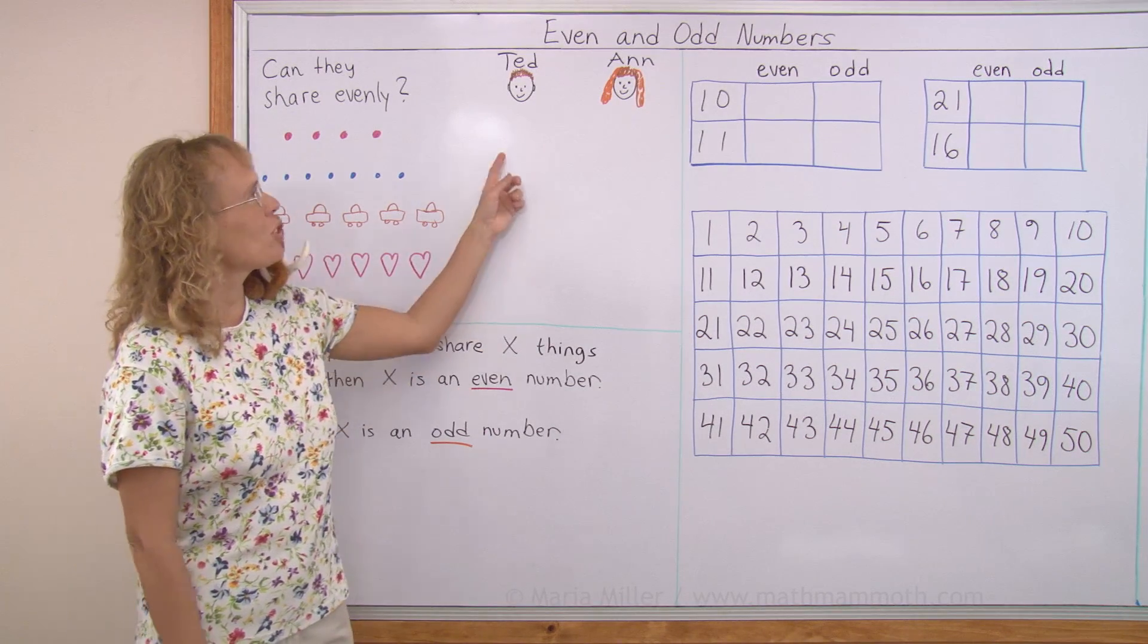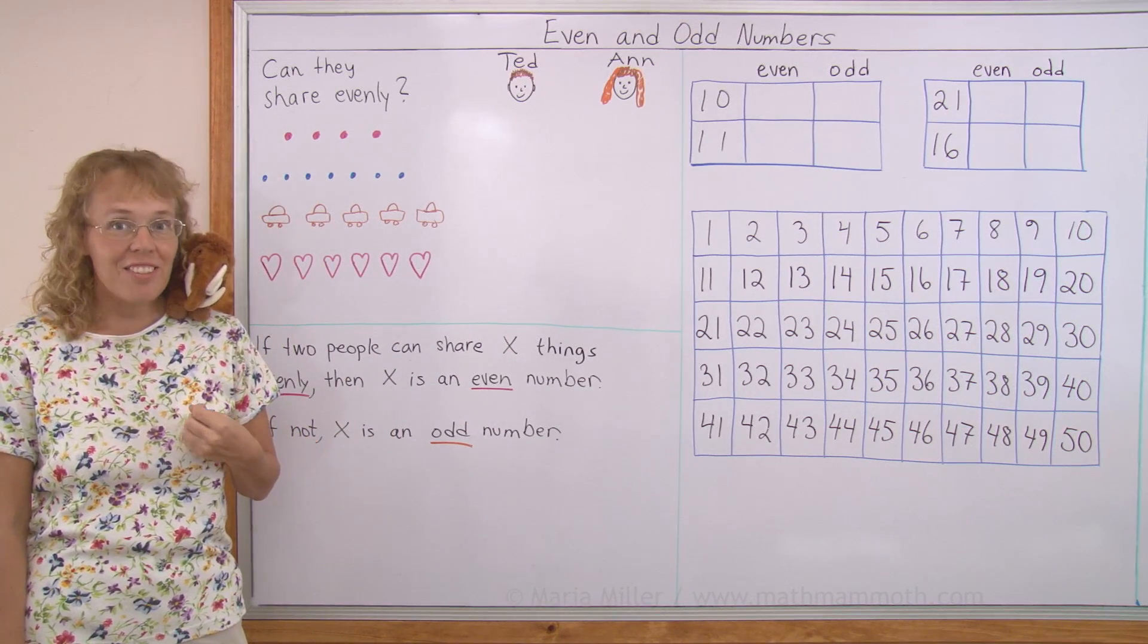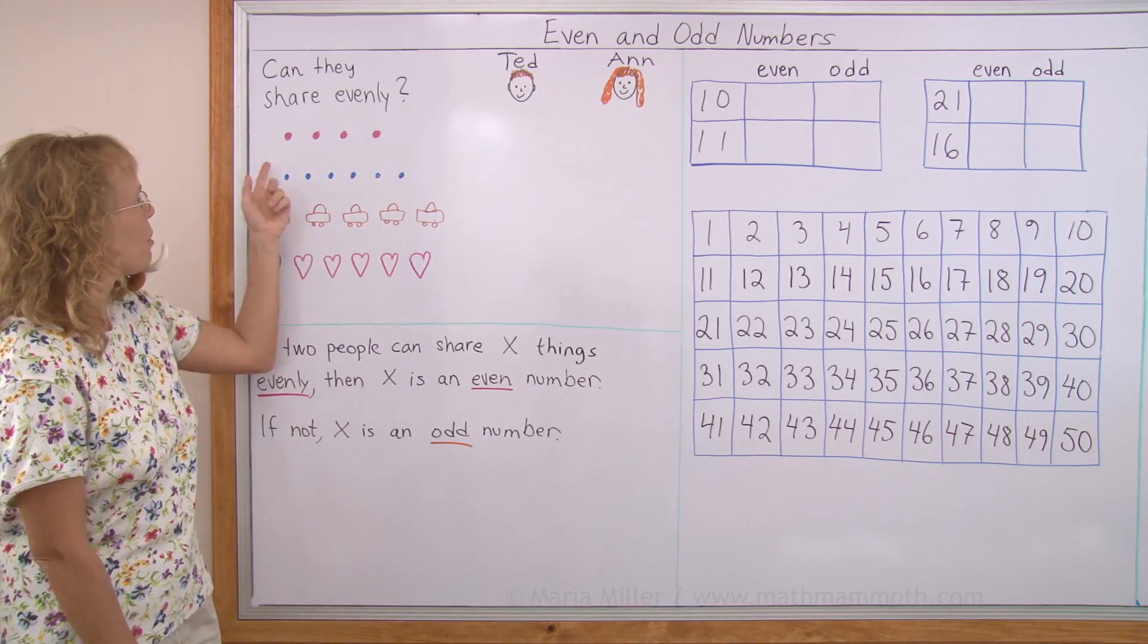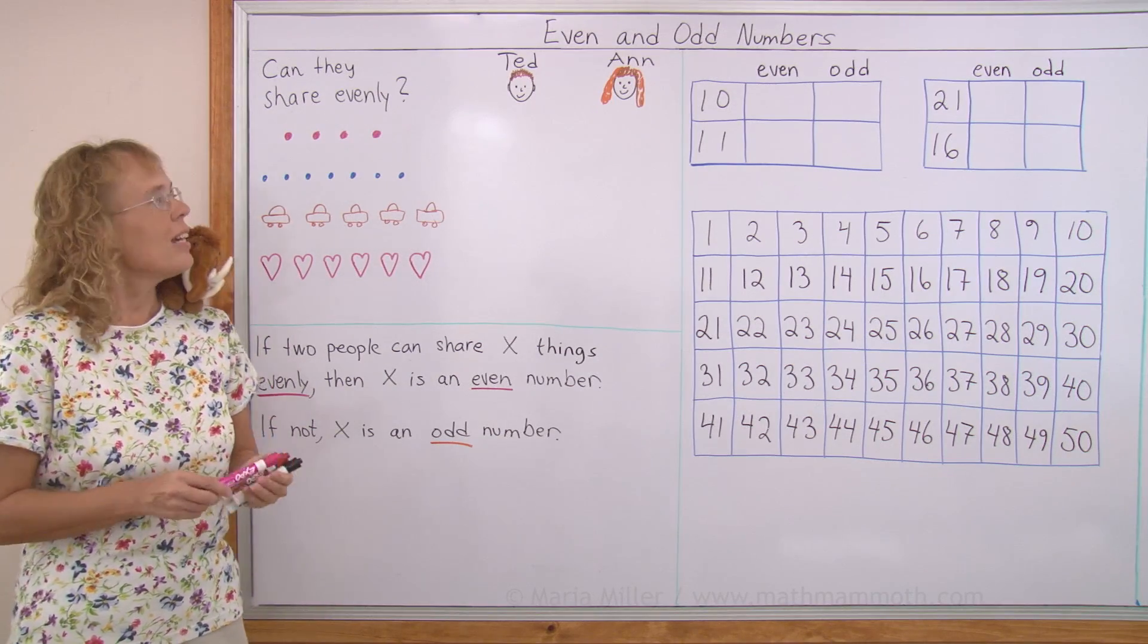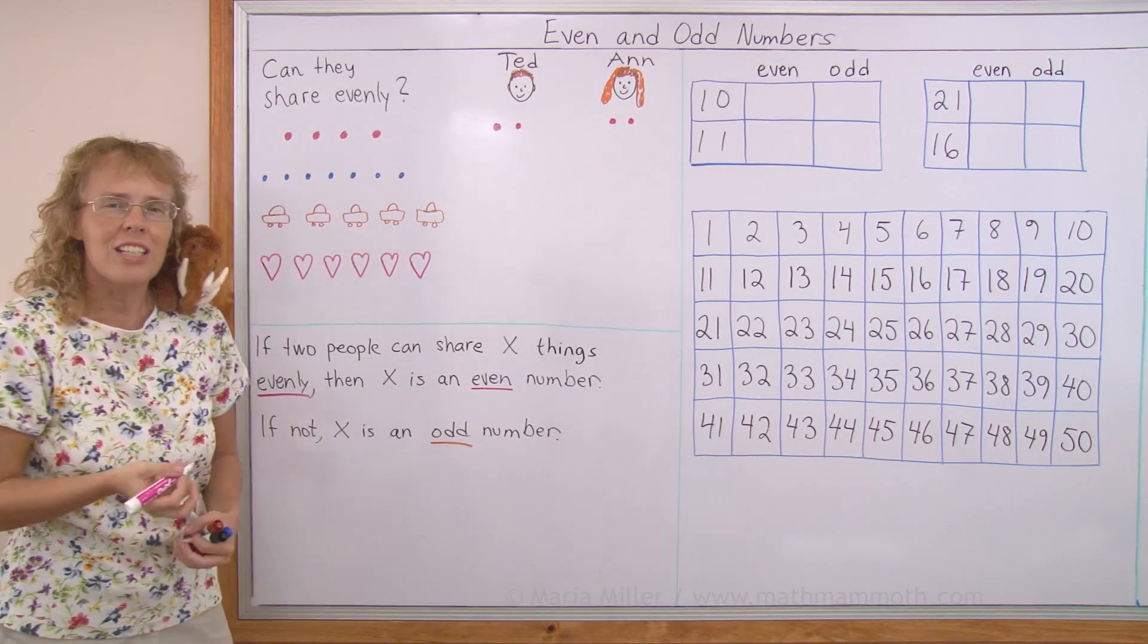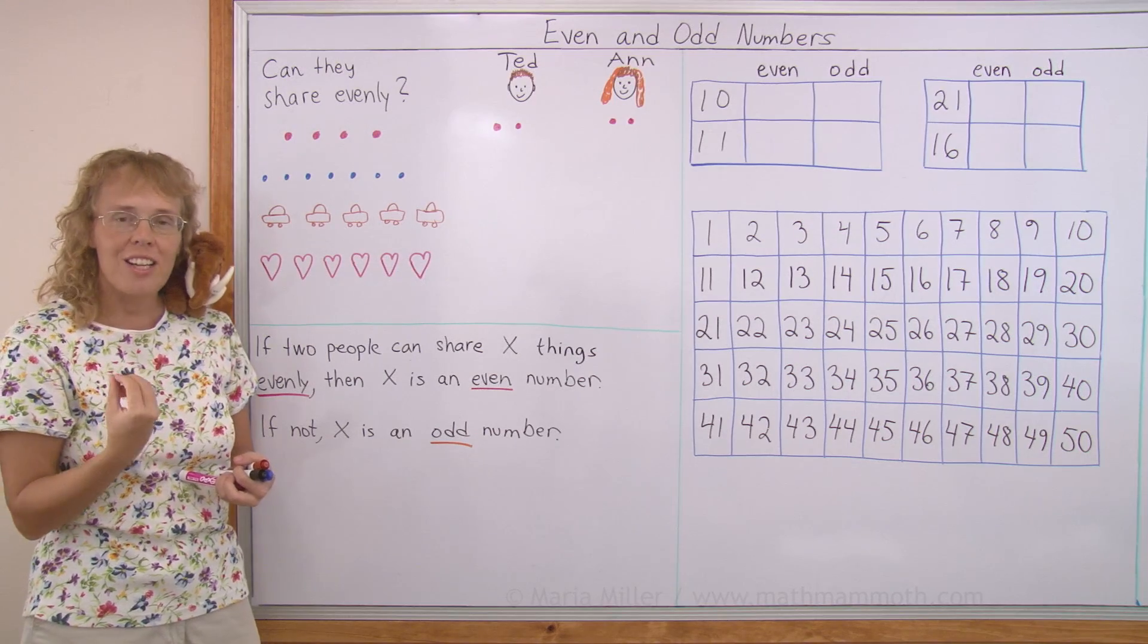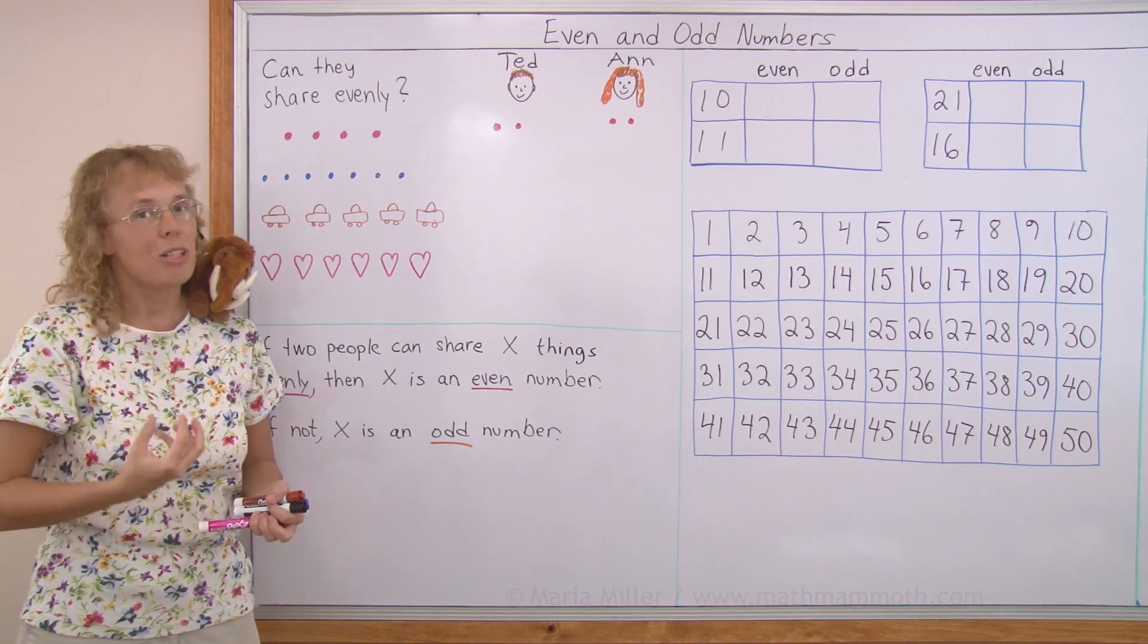Now, here we have two children, Ted and Ann, and they're going to try to share certain things evenly, so that each one gets the same amount. For example, if we have four raspberries, can they share those four raspberries evenly? Yes, they can, because I can draw two for Ted and two for Ann. See, both get the same amount. So, then we say that four is an even number, because four things can be shared evenly when you have two people sharing.